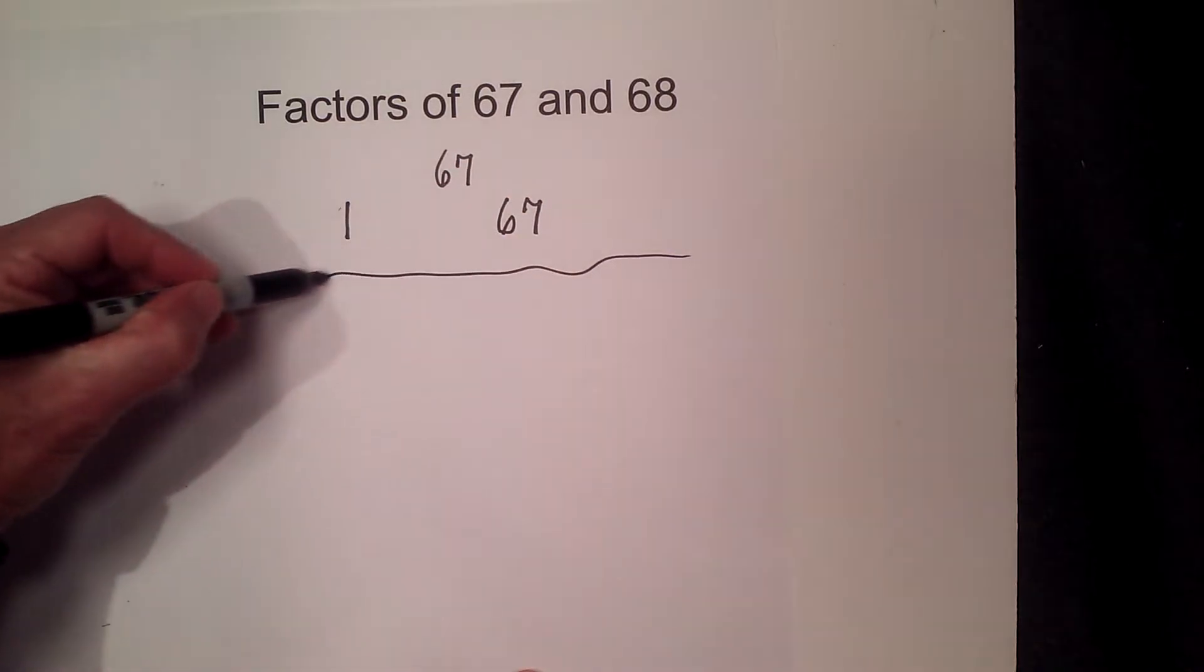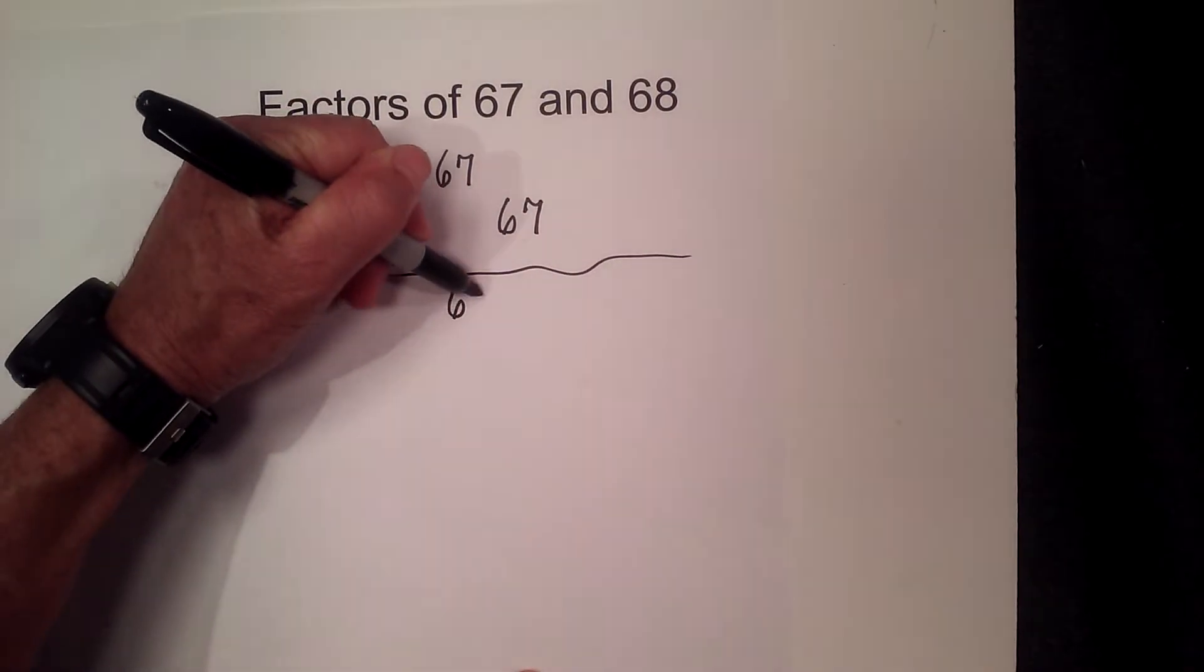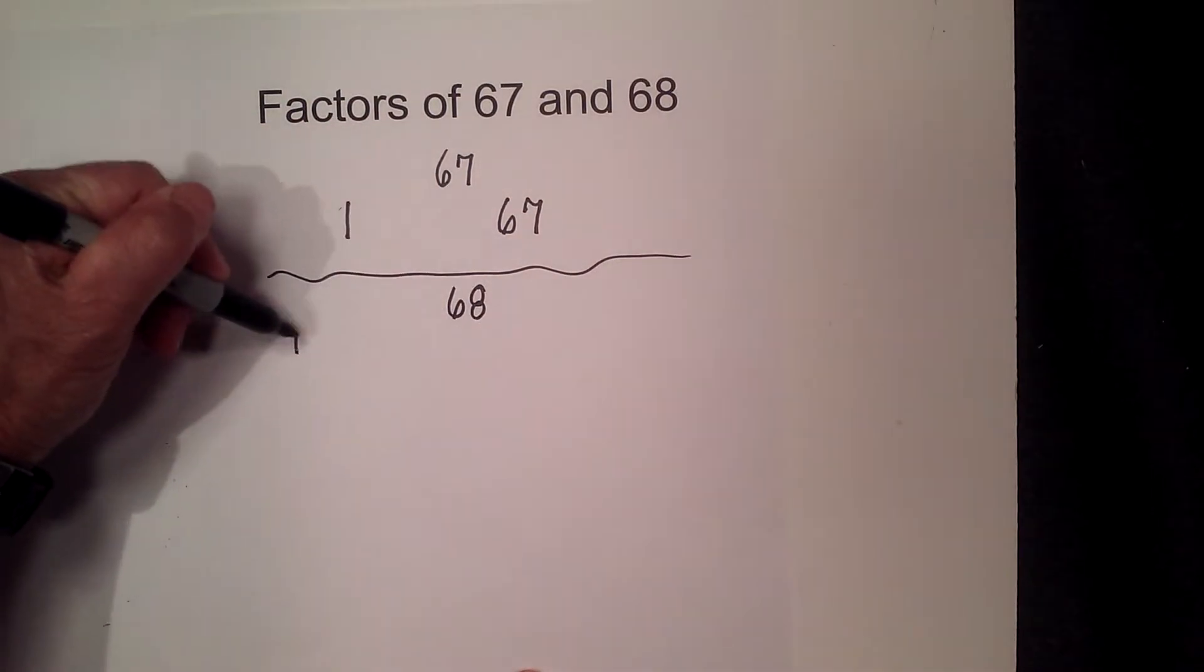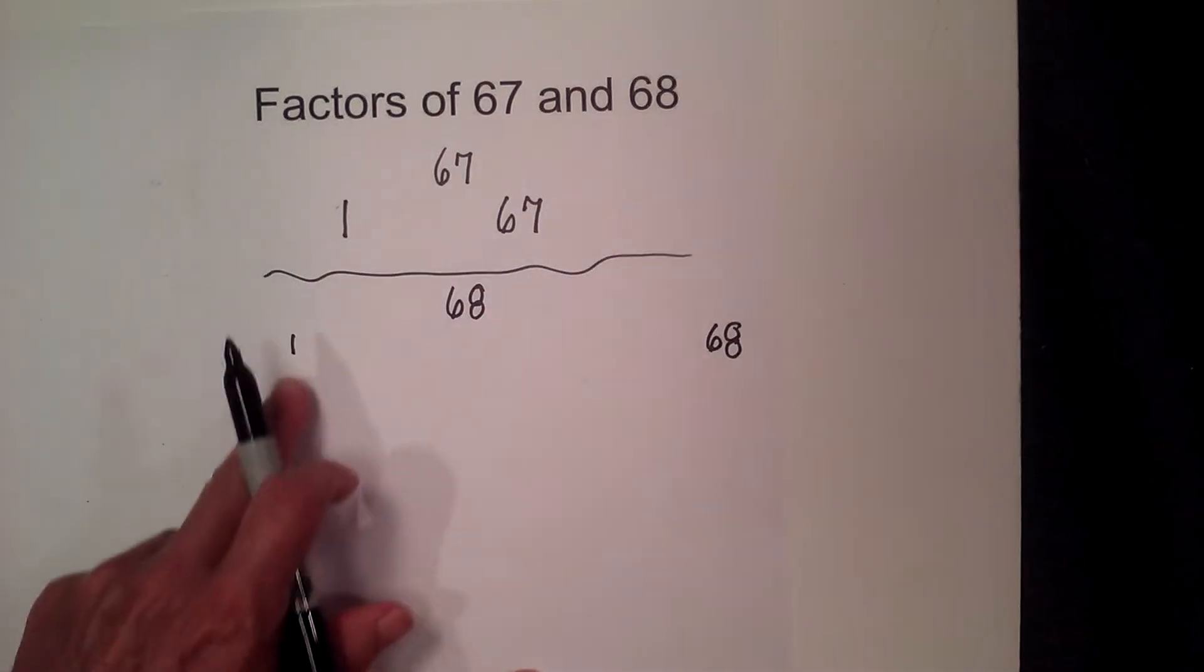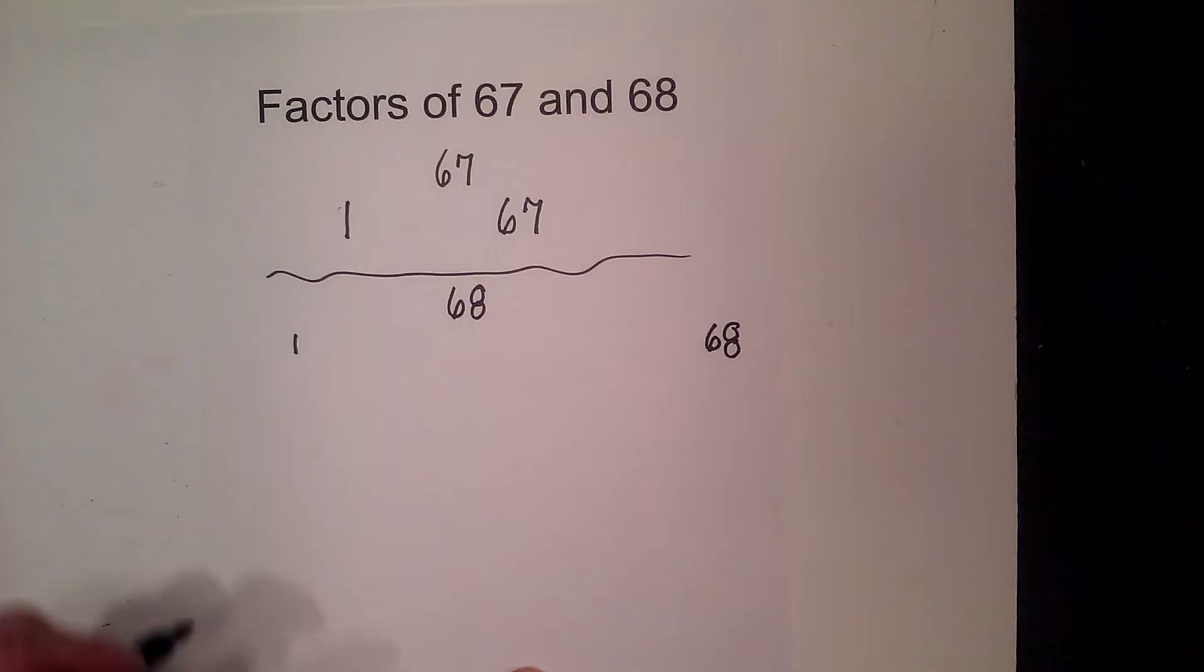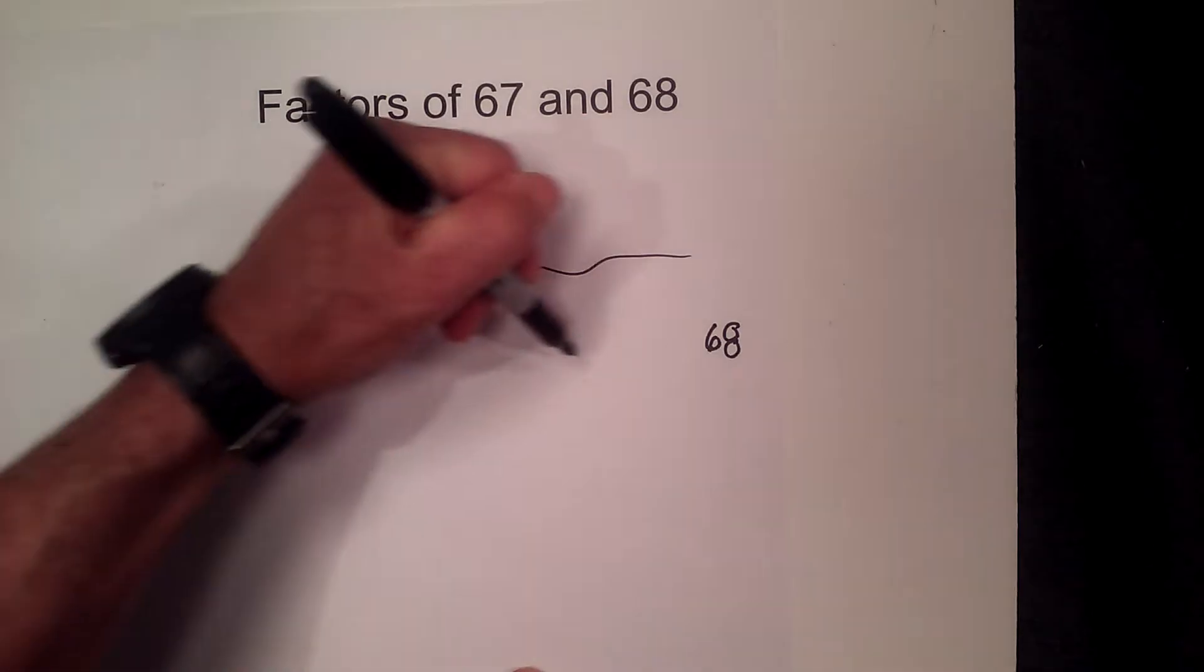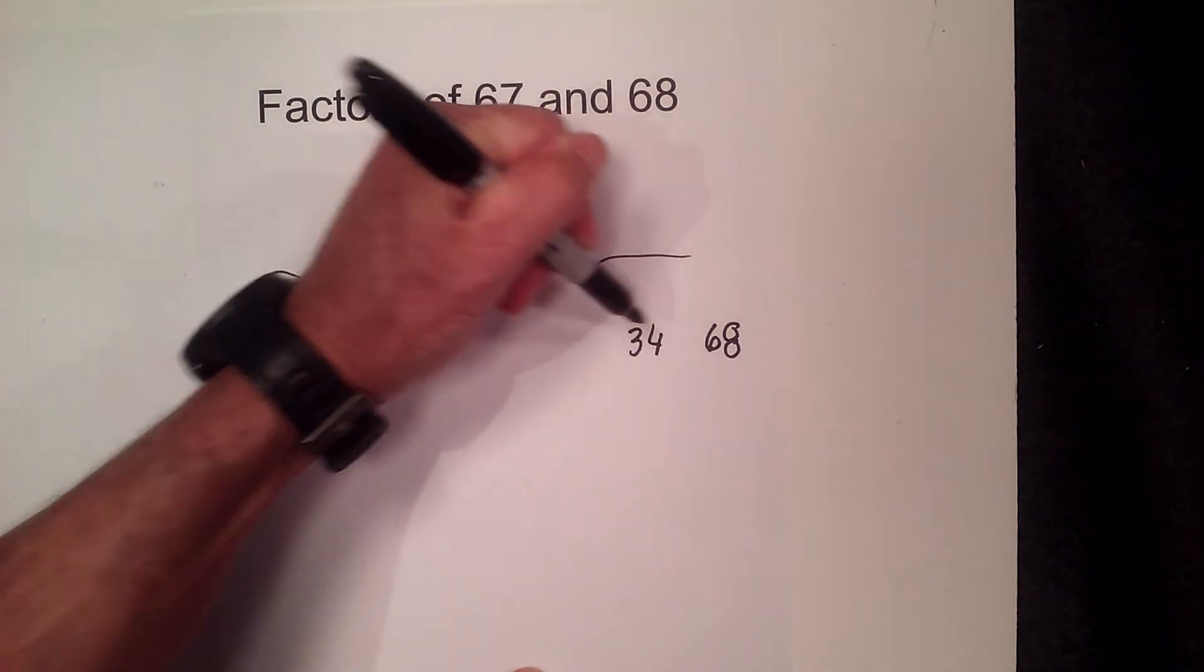Now for 68, let's get started. I like to start with 1 times 68, then find the factors in between that multiply together. 2 times 34